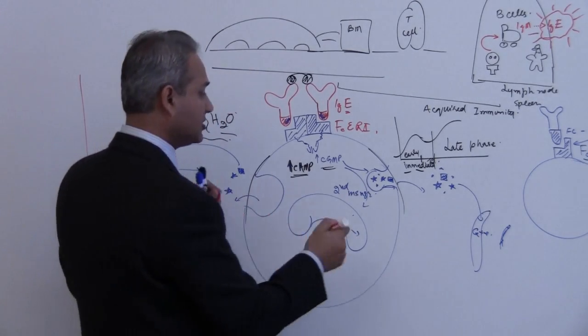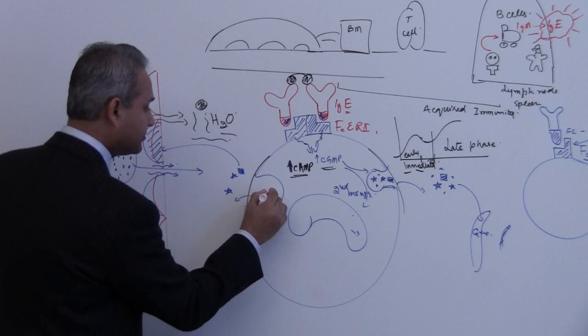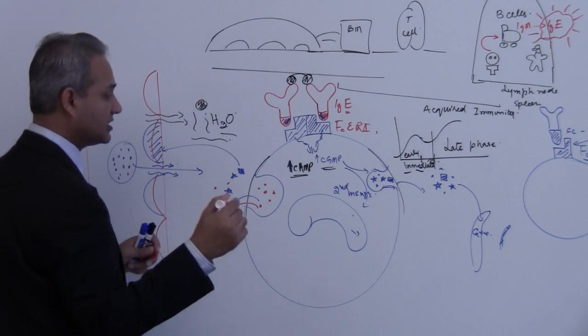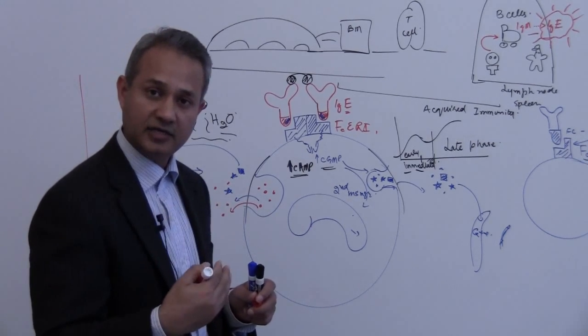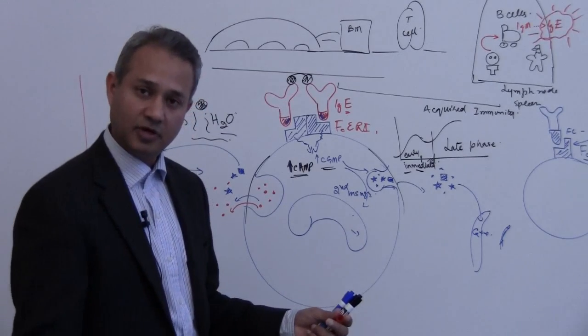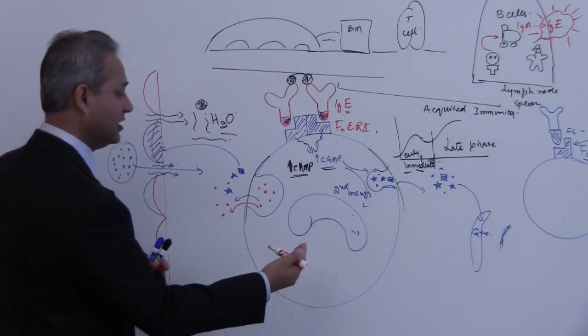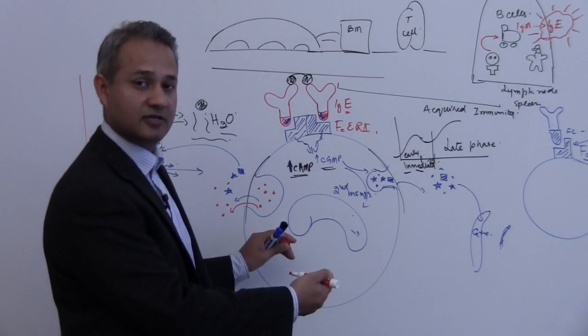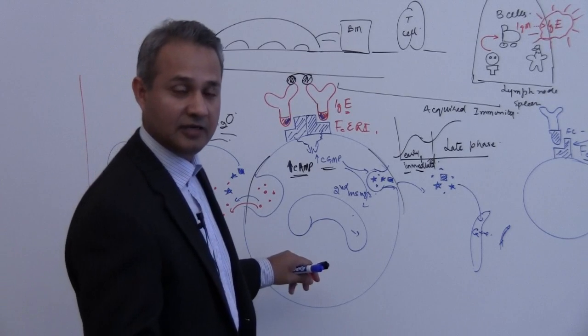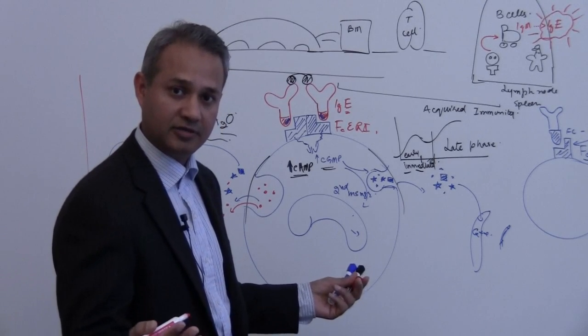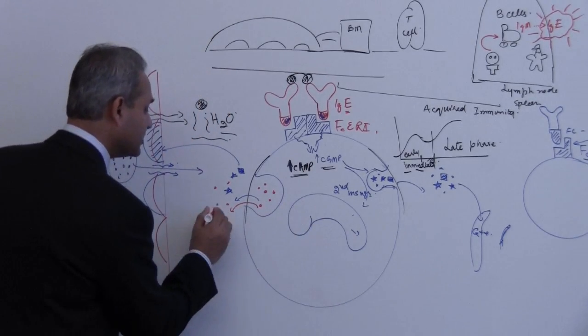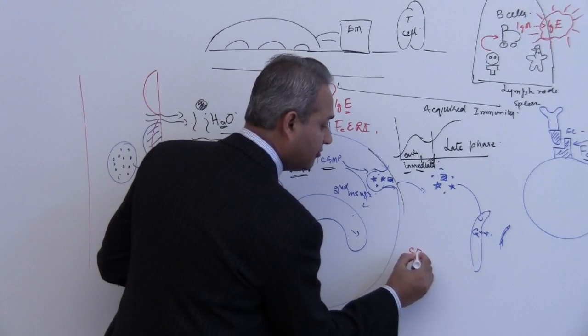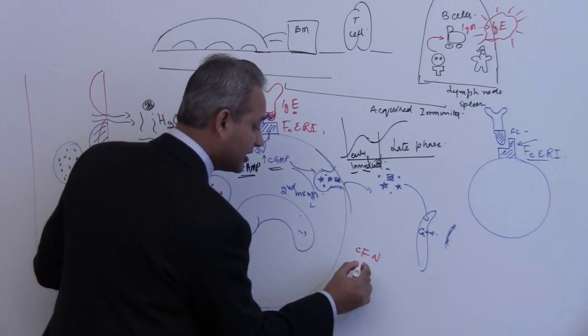Although what I forgot to mention was that when this degranulation happens, there are certain chemotactic factors which are released as well. So the chemotactic factors are going to attract other cells in this area to participate in the problem, or in the solution, whichever way. If you are a human, then you would say that these cells are causing the problem. If you yourself are a basophil, then you think that you are actually helping. So you are part of a solution. Anyways, these chemotactic factors which are very important are the chemotactic factor for neutrophil, chemotactic factor for eosinophil.